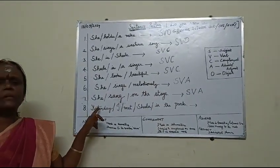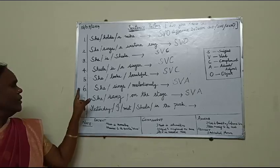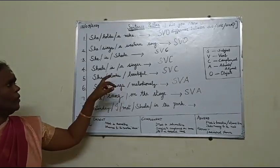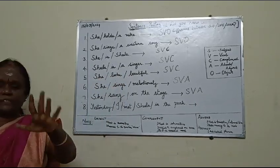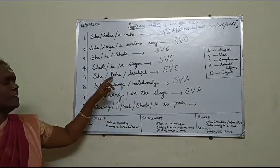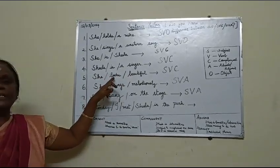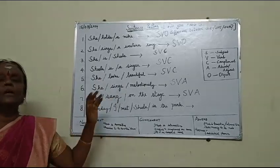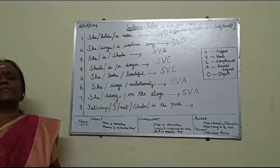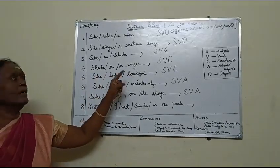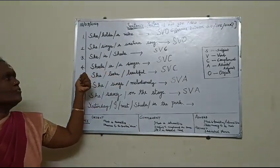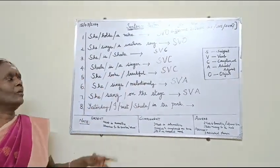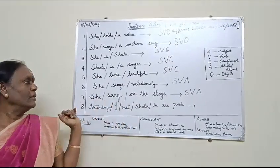Why in the fifth sentence do we say SVC instead of SVA? Because the verb is is. Just replace the verb 'looks' with 'is' — she is beautiful. Looks is an intransitive verb; it describes the person. She is the subject complement — it tells you she is beautiful.